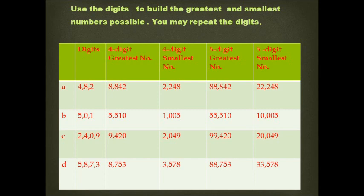The last part: the digits are 5, 8, 7, and 3. The greatest four-digit number formed is 8,753 and the smallest four-digit number formed is 3,578. The greatest five-digit number formed out of these digits is 88,753 and the smallest five-digit number formed out of these digits is 33,578.